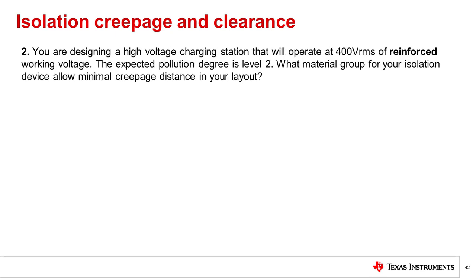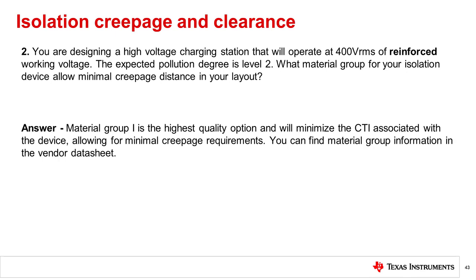You are designing a high-voltage charging station that will operate at 400 volts RMS of reinforced working voltage. The expected pollution degree is level 2. What material group for your isolation device will allow minimal creepage distance in your layout? Material group 1 is the highest quality option and will minimize CTI associated with the device, allowing for minimal creepage requirements. You can find material group information in the vendor datasheet.